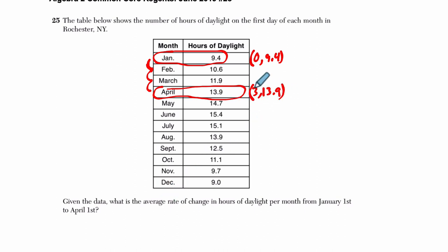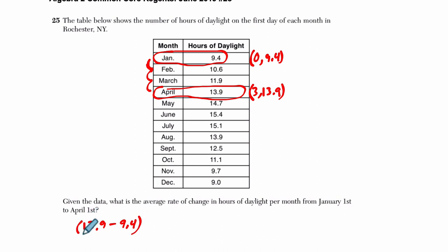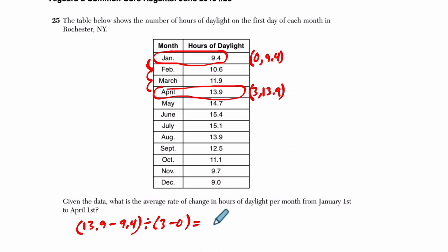Average rate of change is the slope between those two, so we're finding 13.9 minus 9.4, that difference, divided by 3 minus 0. If we set that up, we should get 1.5.